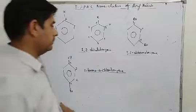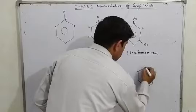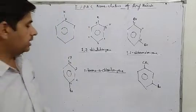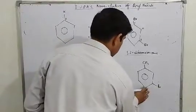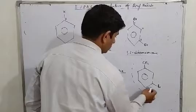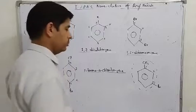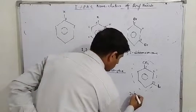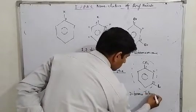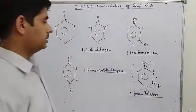Now see an example with toluene attached. This is an example of toluene with Br. For naming, go alphabetically. If this whole group is called toluene, then bromine is at the third position, so it will be called 3-bromotoluene.